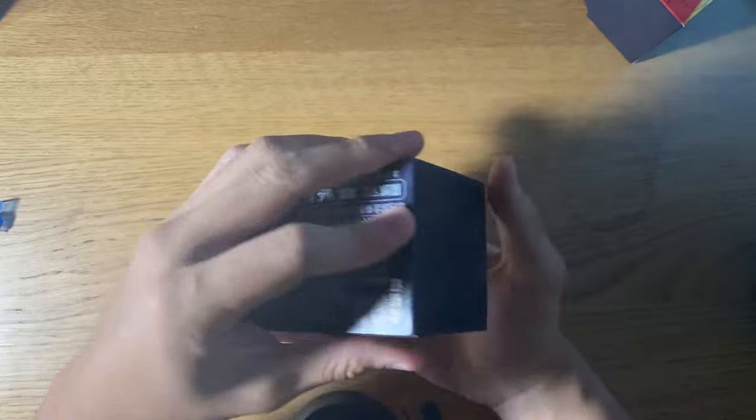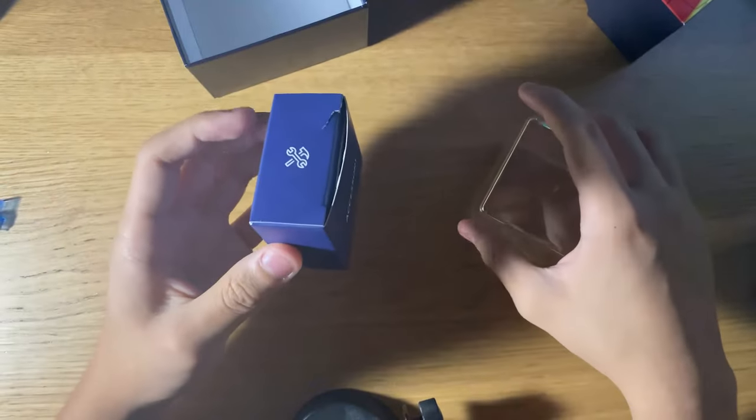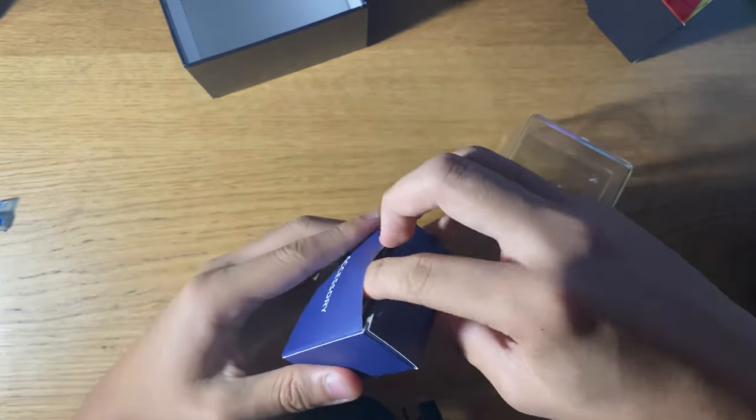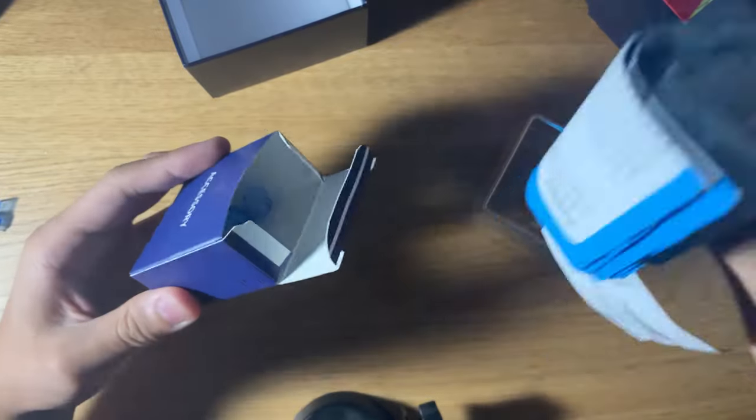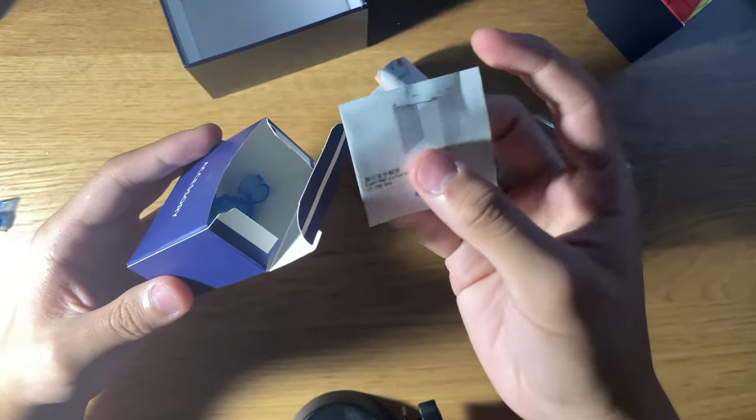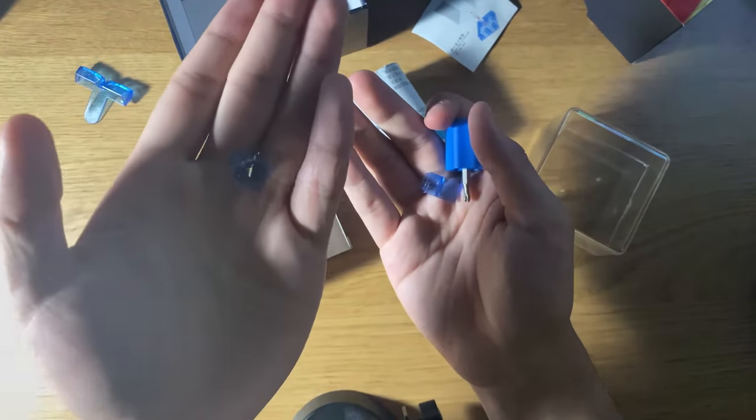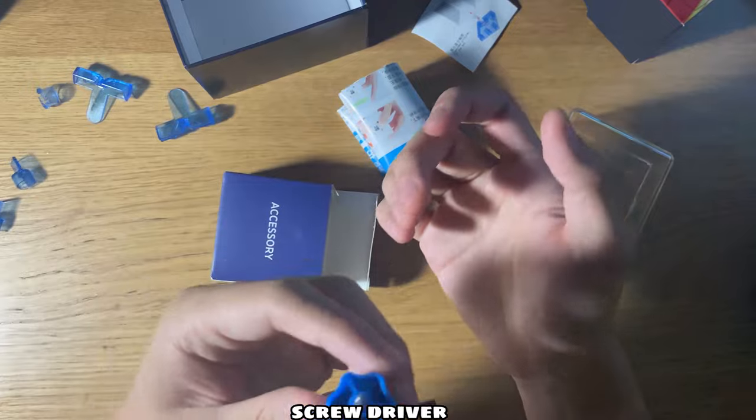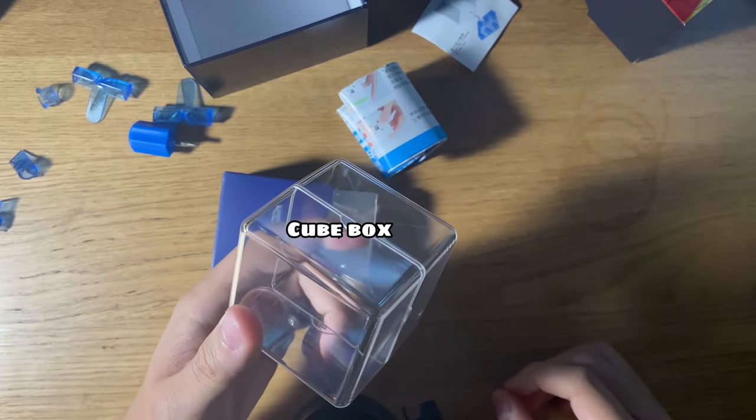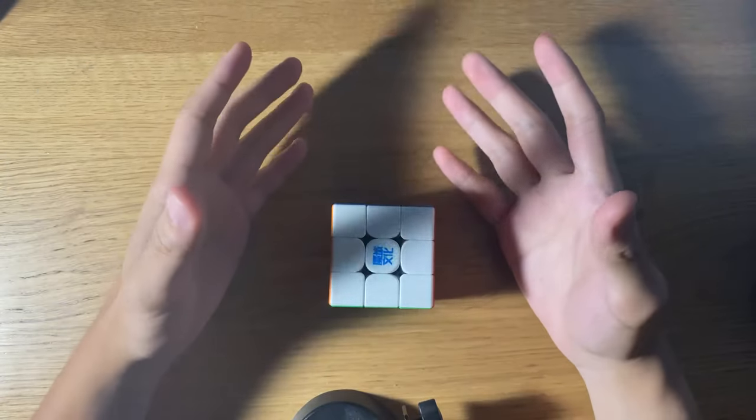So in the box we can see the accessories, which is the exact same accessories as before. You would have a pamphlet and a cube stand thing which they don't even do anymore, some tensioning tools, an extra center, and a screwdriver, and it comes with the box with the cube in it.